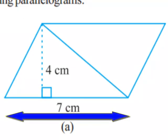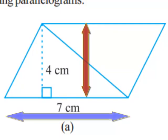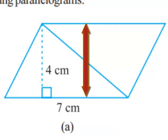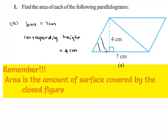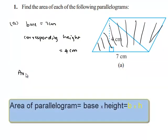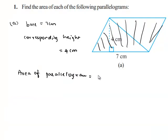Here, he has given base as 7 cm and height as 4 cm. We know that area is the total surface covered by the closed boundary and its formula for parallelogram is given as the product of base and the corresponding height.